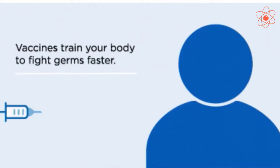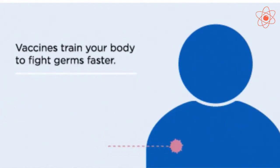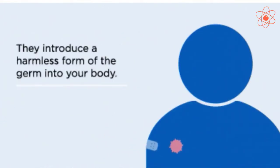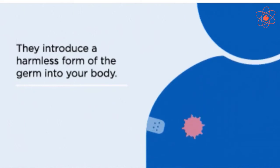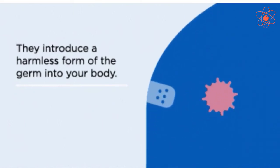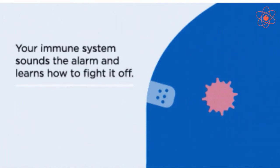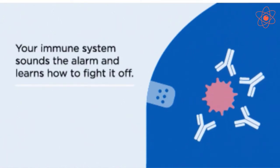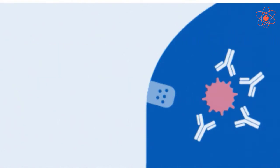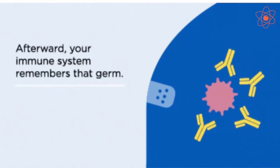How does a vaccine work? When a vaccine is introduced in the body of a healthy person, it acts like an antigen — that is, a foreign substance. The body of the person produces antibodies against the introduced microbes.